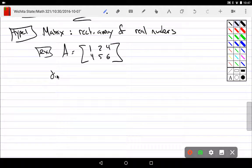For dimensions, we always say row by column, and so A is what? 2 by 3. We always say row first, then column.